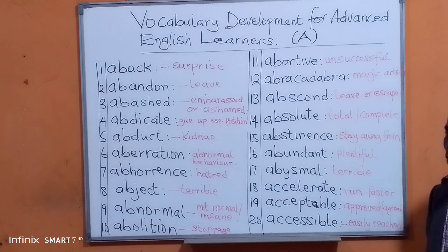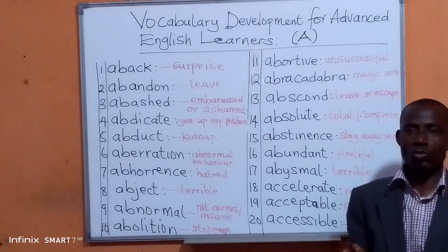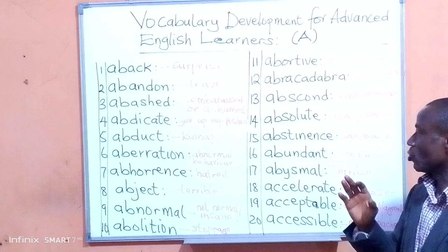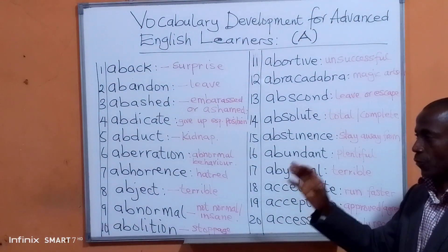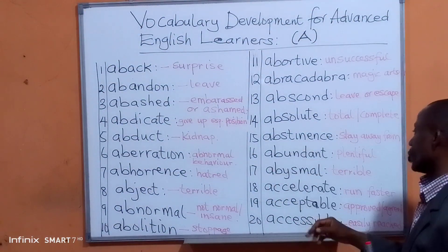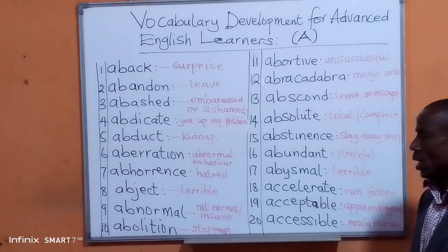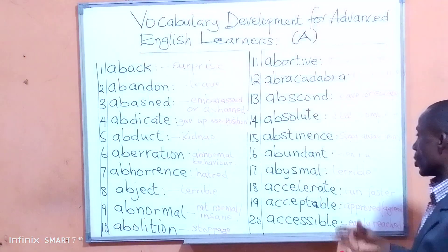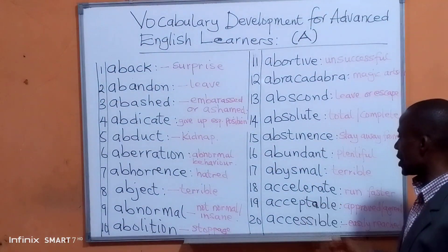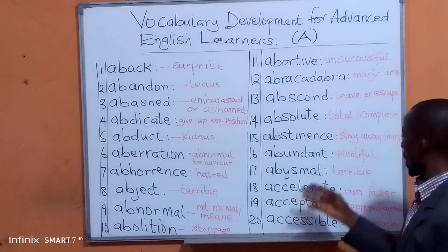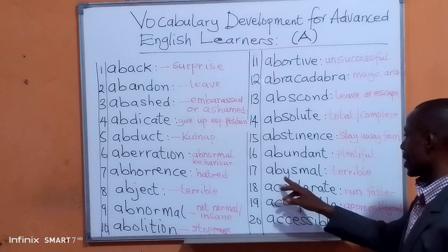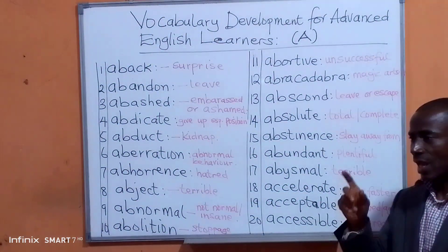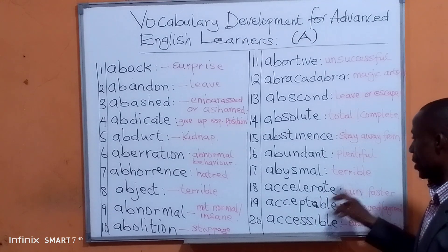Abstinence means stay away. We want everybody to stay away from this. There should be abstinence from alcohol drinking. Abundant means plenty. For example: 'We have abundant bread this year. We have abundant goods in this place.' Abysmal means terrible. For example: 'This is an abysmal behavior. This is an abysmal — terrible failure.'